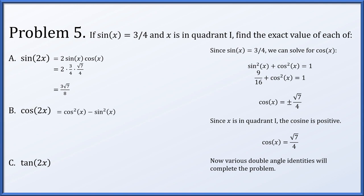Next, cosine of 2x is cosine squared x minus sine squared x. Since cosine of x is root 7 over 4, its square is 7 sixteenths. Since sine of x is 3 fourths, its square is 9 sixteenths, and 7 sixteenths minus 9 sixteenths is negative 2 sixteenths, or minus 1 eighth. Finally, tangent of 2x is sine of 2x over cosine of 2x. We've solved for both: 3 root 7 over 8 over negative 1 eighth — the eighths cancel, and we simply get negative 3 root 7.